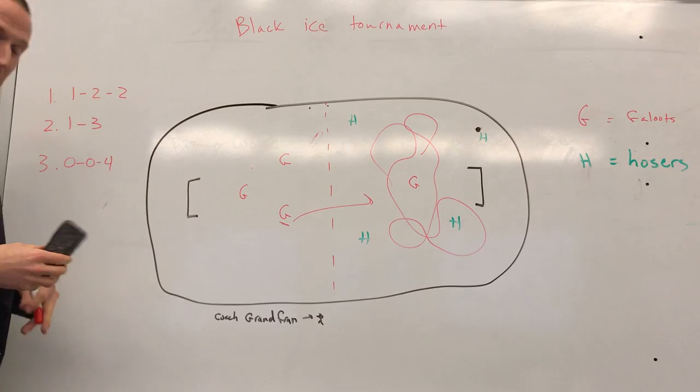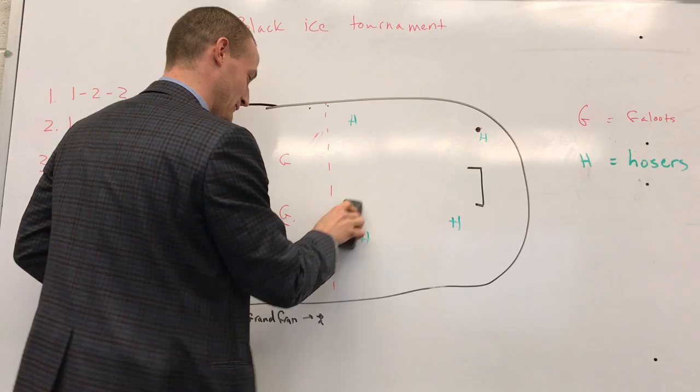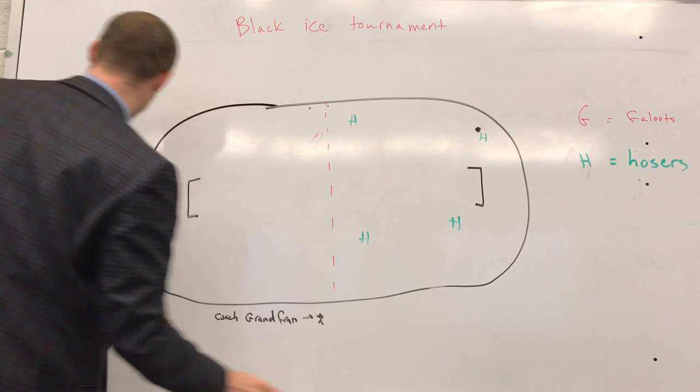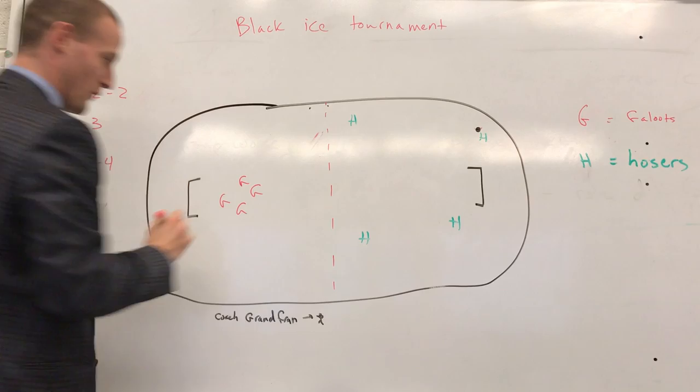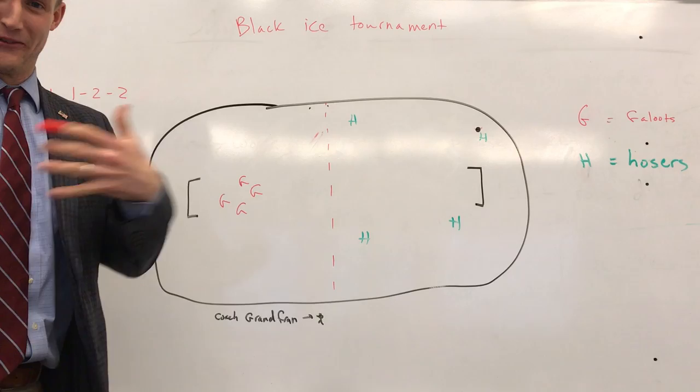And the final thing I could suggest here, if I may, as your self-appointed coach, is what I would call the 0-0-4. Which basically is all four Galutes in a tight triangle right in front of our own net. We basically park the bus, set up the wagons if you will.